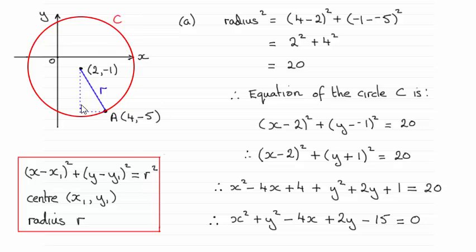So if you draw a sketch, it might help just to appreciate the problem. We've got our centre coordinates (2, -1). We need to get the radius though, and we can do that just by working out the distance between the centre and the point A.